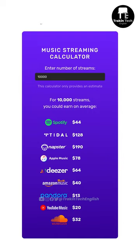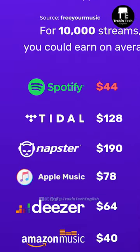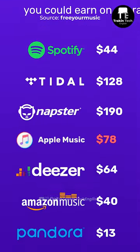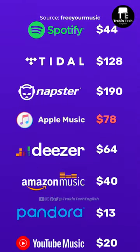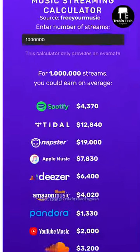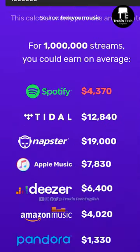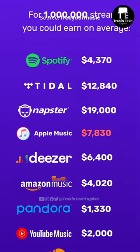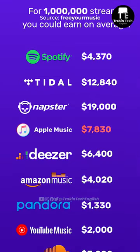For example, if your song has 10,000 streams, you can make $44 on Spotify and $78 on Apple Music. And if you have a million streams, you get $4,370 on Spotify and close to $7,800 on Apple Music.